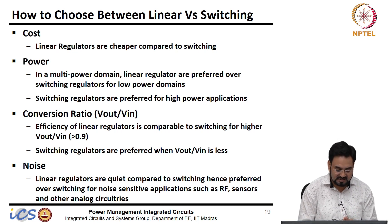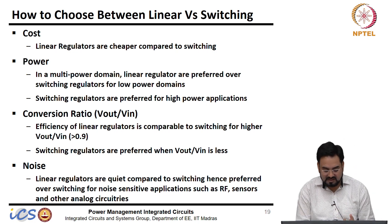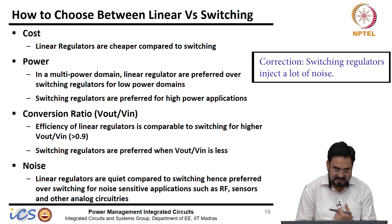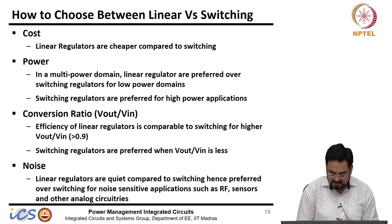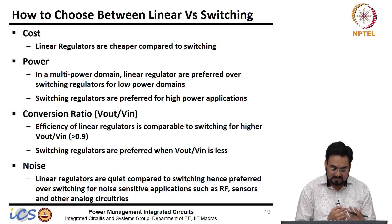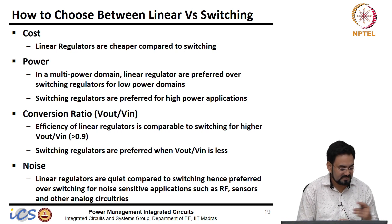Noise is another point to consider. Linear regulators are quiet because they are not switching. Since switching regulators switch, they inject a lot of noise into the output as well as into VDD and ground. So for noise-sensitive applications such as RF, sensors, and other analog circuitry, we always prefer linear regulators.